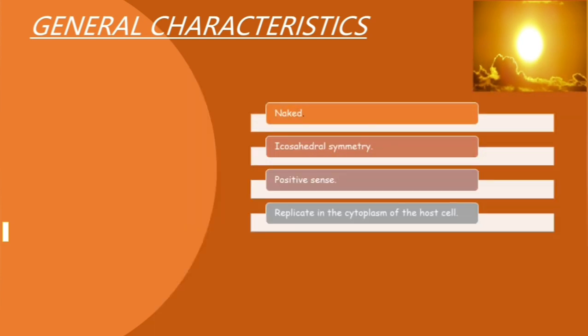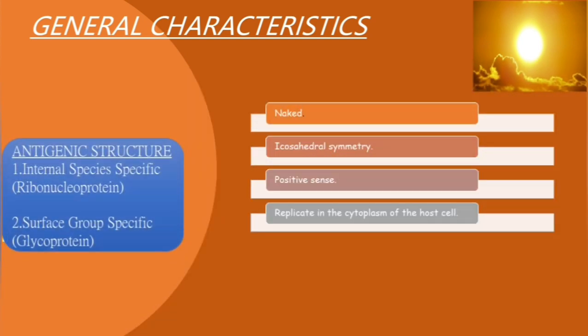Now about the antigenic structure, they have two kinds. Number one, they have an internal antigen which is species-specific and is actually ribonucleoprotein. Number two, they have a surface antigen which is group-specific and is actually a glycoprotein.